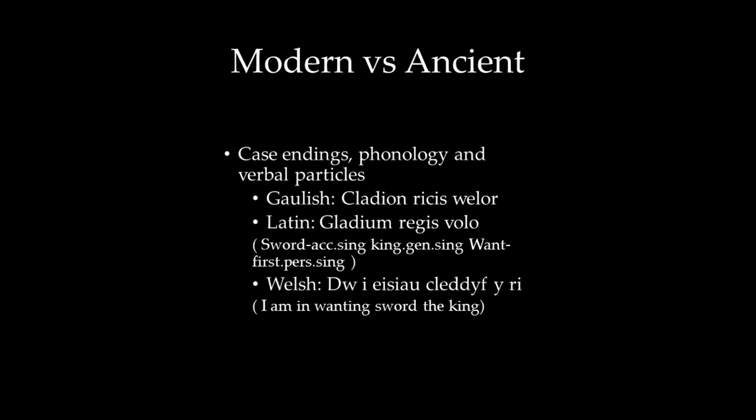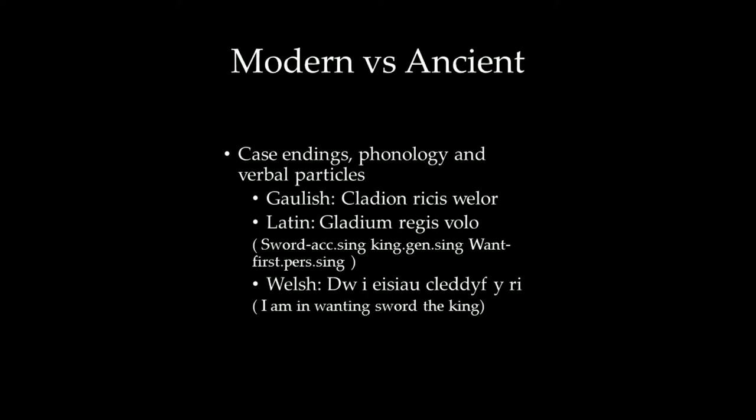Gaulish can even sound closer to Latin in some cases than to modern Celtic languages. The Romans themselves said that written Gaulish was fairly easy to translate, because the case endings, the phonology, and the verbal particles are very similar. To show how similar they can be, consider the sentence meaning 'I want the sword of the king.' In Gaulish that would be one form, while in Latin it would be very comparable — the word for sword takes the accusative case with a nasal consonant, the word for king shows the genitive case with the S and the additional E vowel, and the word for 'I want' in Gaulish has an additional R at the end, but that won't be too hard to translate.